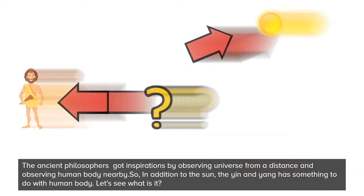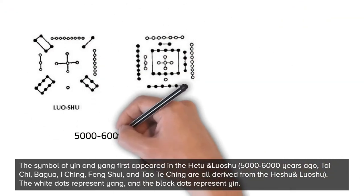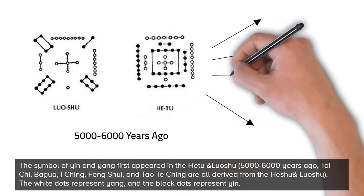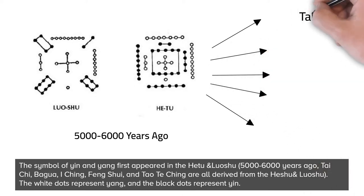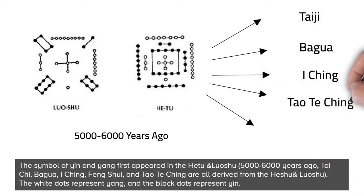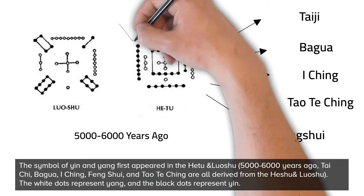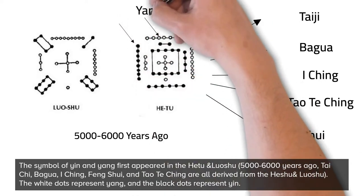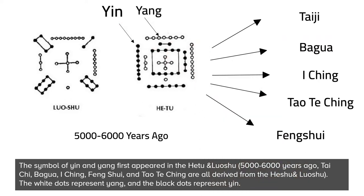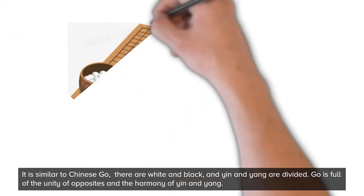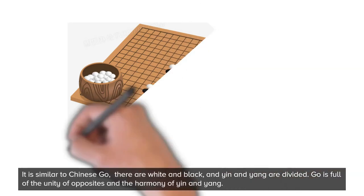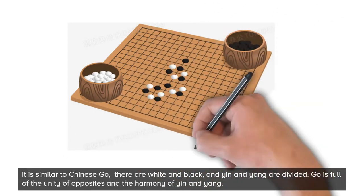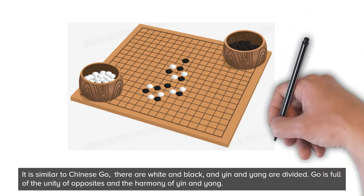The symbol of yin and yang first appeared in the Hetu and Luoshu, 5,000 to 6,000 years ago. Tai Chi, Bagua, I Ching, Feng Shui, and Tao Te Ching are all derived from the Hetu and Luoshu. The white dots represent yang and the black dots represent yin. It is similar to Chinese Go — there are white and black pieces, and yin and yang are divided. Go is full of the unity of opposites and the harmony of yin and yang.